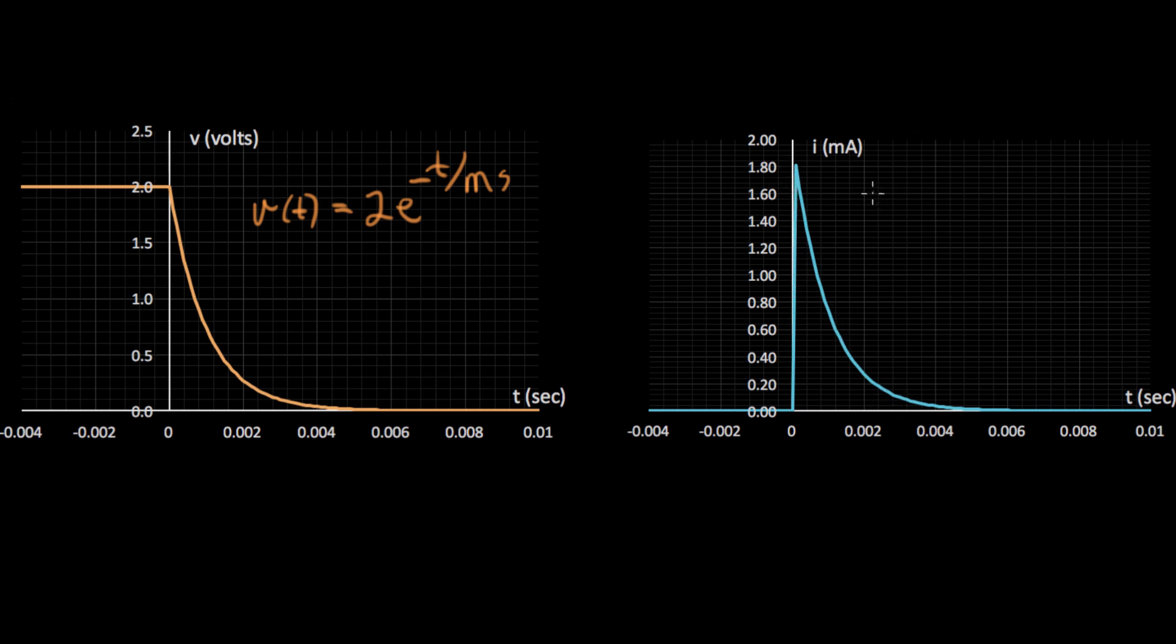And this is the equation here. I of T equals two volts over 1,000 E to the minus T over RC or T over 1,000.